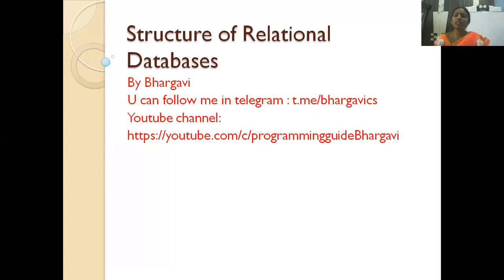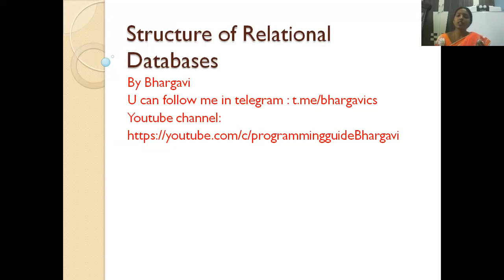A database is nothing but a collection of data organized in a structured way. In RDBMS — that is, Relational Database Management System — the data is represented in the form of relations. DBMS has different types: object-oriented, network, hierarchical, distributed, and relational. Most organizations use RDBMS because it is easy to understand and easy to implement.